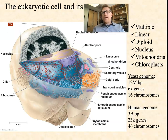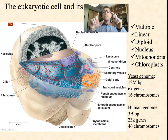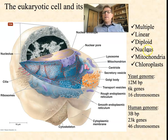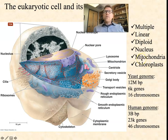Many eukaryotes are diploid — like you and I — meaning they've got chromosome number one from mom, but also another copy from dad with slightly different versions of all the genes. Prokaryotes are all haploid, where they only have one copy of every gene. Eukaryotes also have membrane-bound organelles like the nucleus, mitochondria, and chloroplasts. Interestingly, mitochondria and chloroplasts also have some DNA of their own, and they divide independently by essentially binary fission, just like the prokaryotes do.